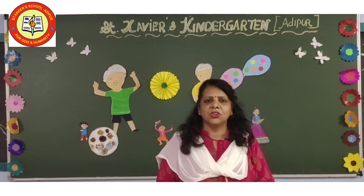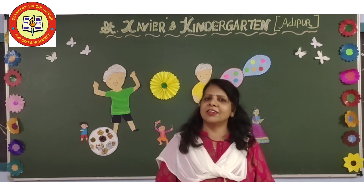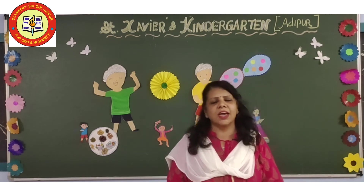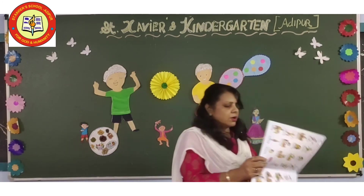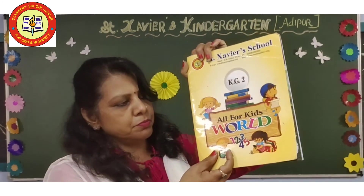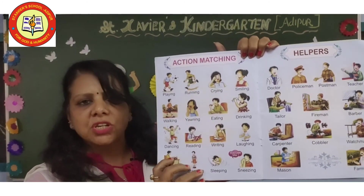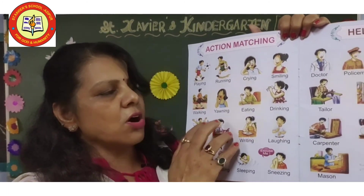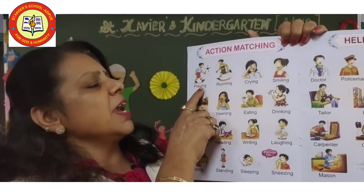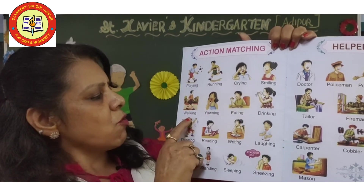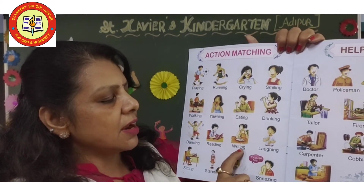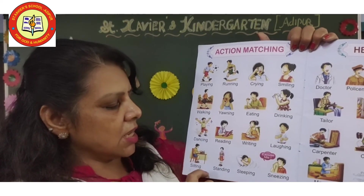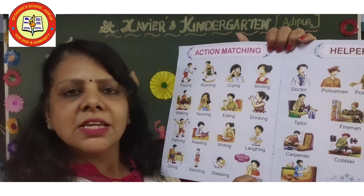So children, did you enjoy the action words? Yes. There are two girls — one is Sia and one is Hazel. They both are showing you action words. So in your all four kids book, there are some action words. You have to learn all these action words: playing, running, crying, smiling, walking, yawning, eating, drinking, dancing, reading, writing, laughing, sitting, standing, sleeping and sneezing.